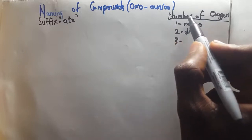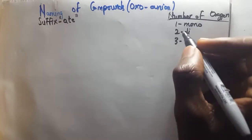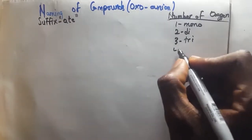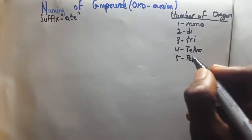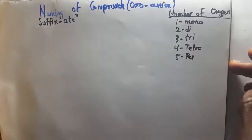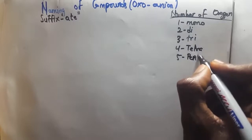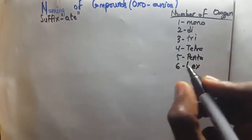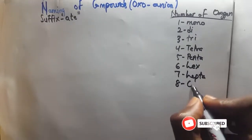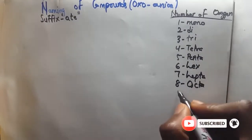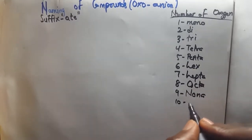The number of oxygen prefixes: when the number of oxygen is 1, we call it mono; when it is 2, we call it di; when it is 3, we call it tri; when it is 4, we call it tetra; when it's 5, we call it penta; when it is 6, we call it hexa; when it's 7, we call it hepta; when it's 8, we call it octa; when it's 9, we call it nona; and 10 is deca.